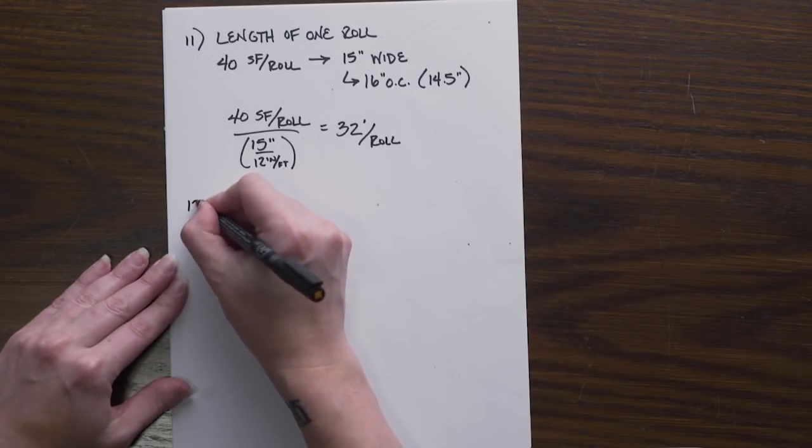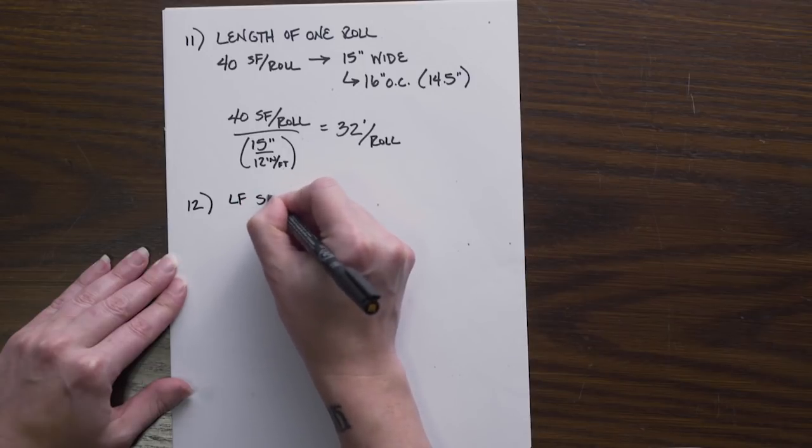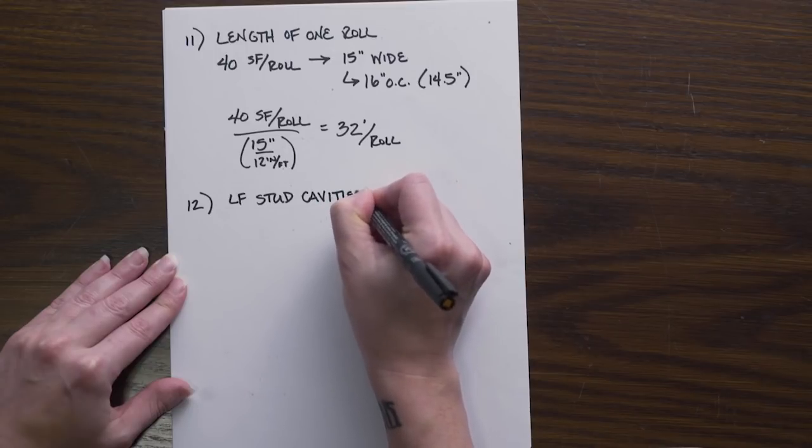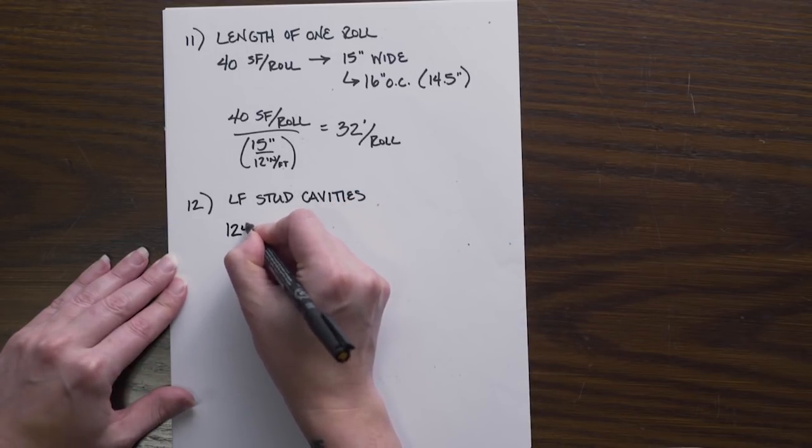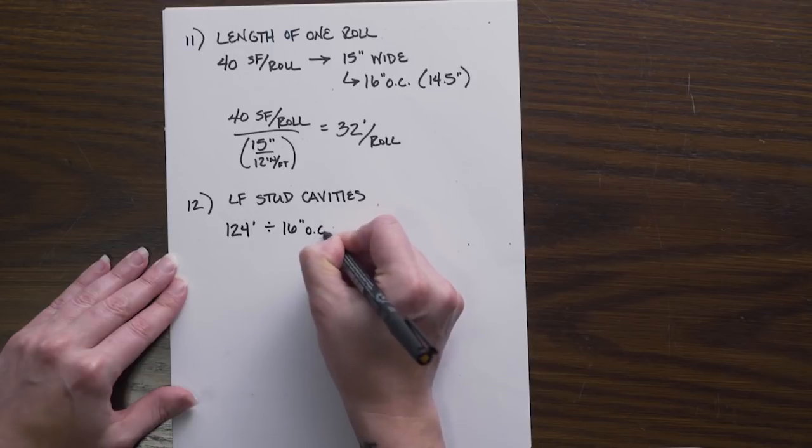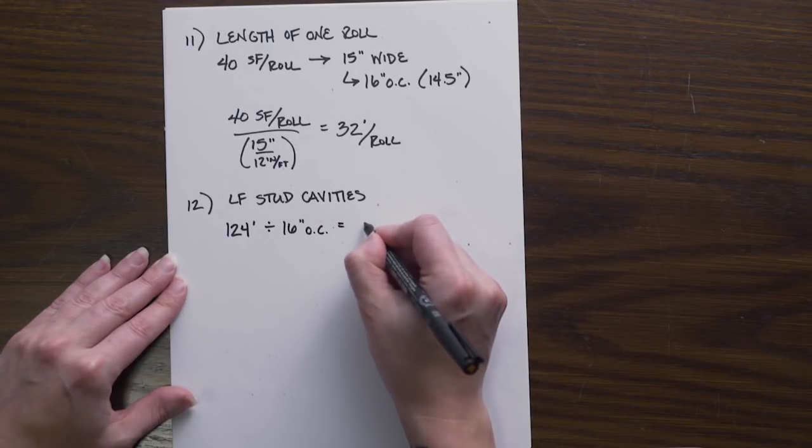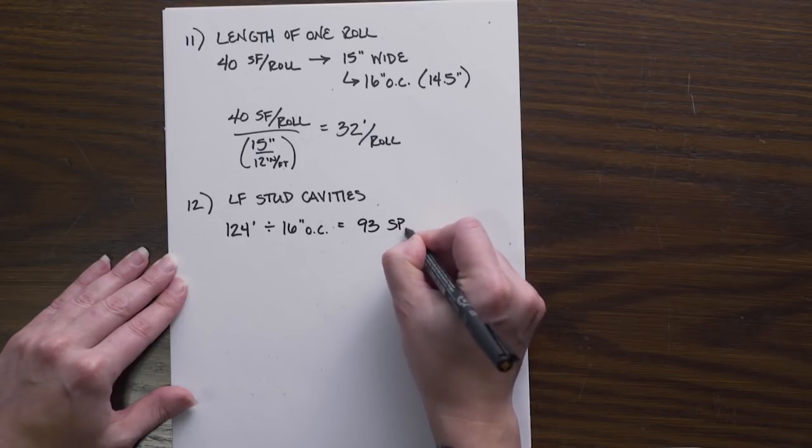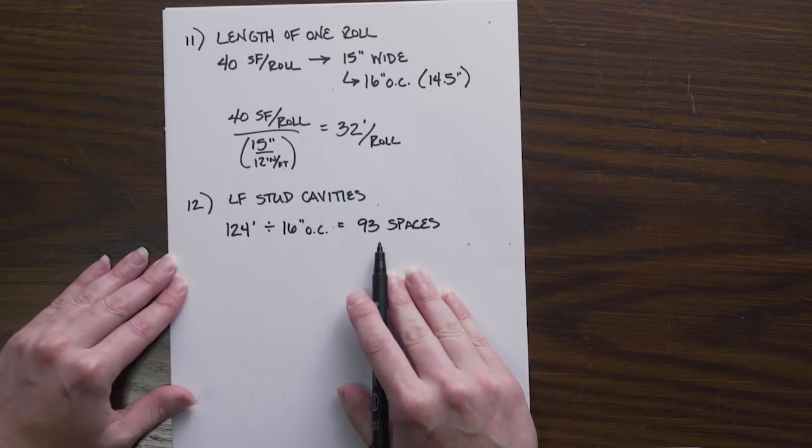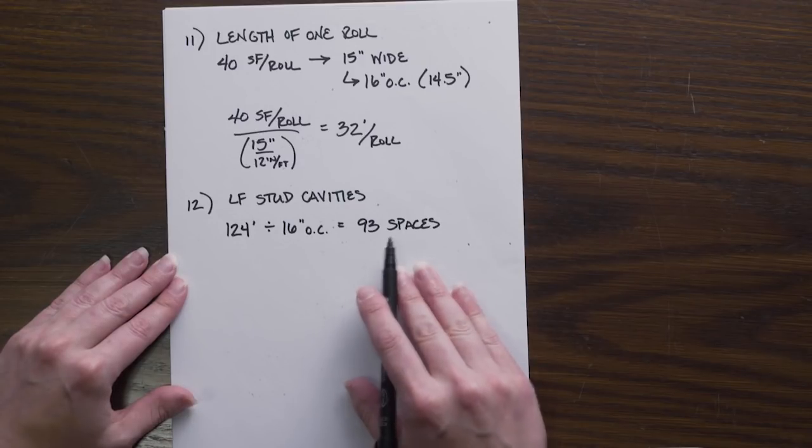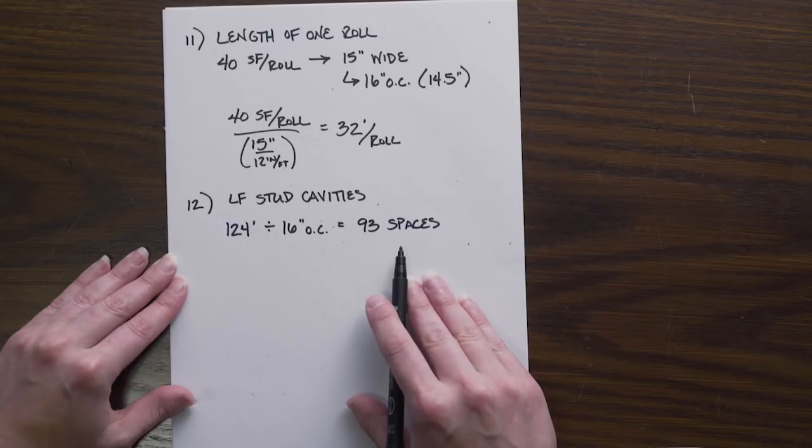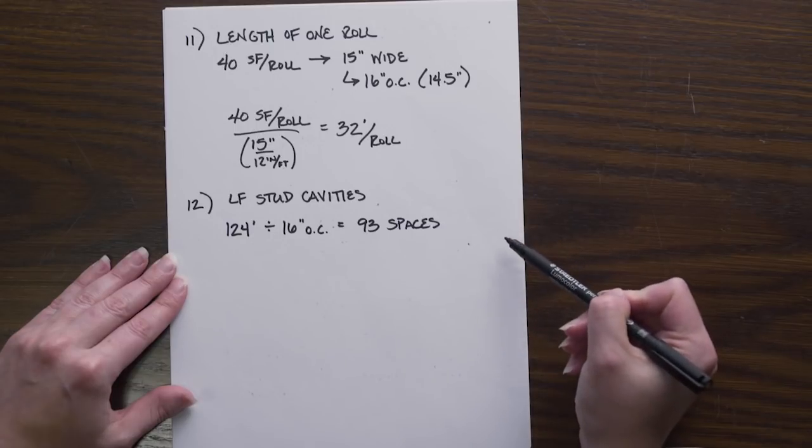We can figure out the lineal foot of stud cavities in our wall system by taking our 124 foot perimeter, divide it by our 16 inch on center spacing of our studs, and we get 93 spaces. Important to note: in all of the repetitive items that we have been calculating to date thus far, we have always added one or subtracted one to get our counted item. So whether it's a joist, whether it's a stud, we need to make sure that we always add one or subtract one.